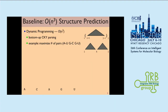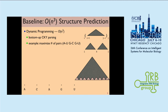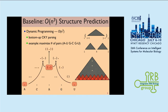Almost all existing approaches use dynamic programming to solve this problem. The intuition is that you first predict the substructures of the easier case, which is a subsequence, and then add them together, all the way up to the final secondary structure. So in the first step, we predict the structure of every nucleotide, then go to 2, 3, 4, and all the way up to the secondary structure of this sequence.